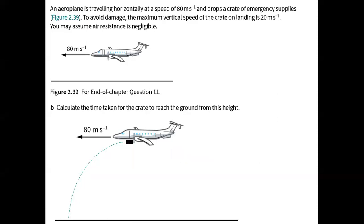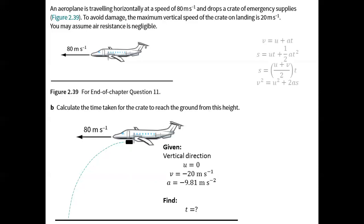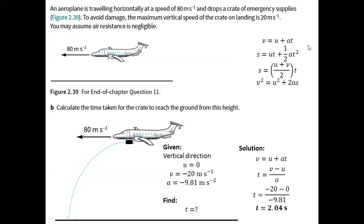Next question: calculate the time taken for the crate to reach the ground from this height. For the vertical motion, initial velocity is zero, final velocity is negative 20 meters per second, and acceleration is negative 9.81 meters per second squared. Since we also know the displacement from the previous question, we can use any of the four equations. Using the first equation and solving for time, we obtain 2.04 seconds.